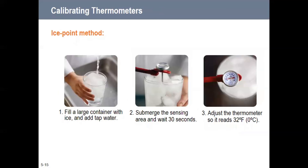The preferred method is the ice point method. Fill a container with crushed or shaved ice, add cold water, stir to get it very cold, then submerge the sensor and wait about 30 seconds for the reading to stabilize. Adjust the thermometer to read 32°F — the freezing point of water. This method is more accurate and avoids the elevation variables of the boiling point method, plus there's no risk of steam burns.